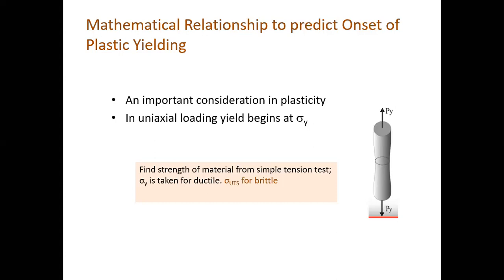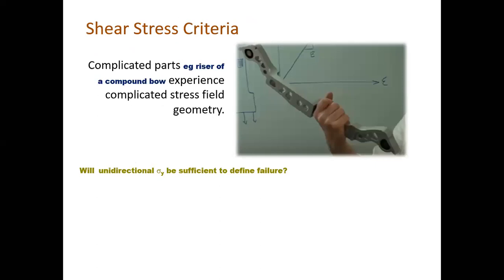The stress-strain relationship also extends to real applications, and it is easy to find material properties in a simple tension test. For ductile materials, we can say yielding occurs at a certain point. In brittle materials, plastic deformation is almost negligible and the material will fail, so we can take the UTS. But this is not easy for real-life components, such as a compound bow riser under complex stress conditions.